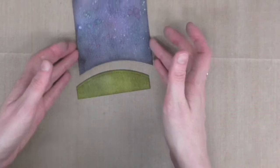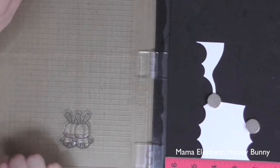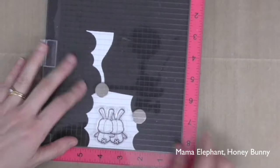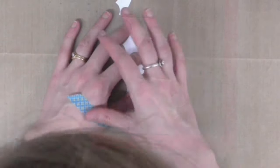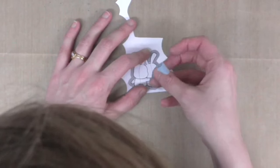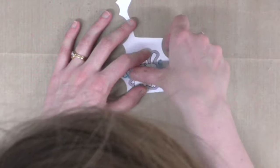So now I have both of these panels all inked up, I'm going to move over to my stamped image. I'm stamping these cute little bunnies onto some Neenah Solar White cardstock, and I'm going to use the coordinating die to cut that out.